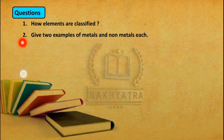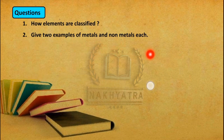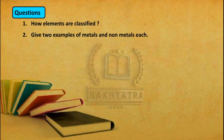Question number 2: Give two examples of metals and non-metals. Two examples of metals are aluminium and mercury. Two examples of non-metals are carbon and hydrogen, and we know that carbon and hydrogen are gases.